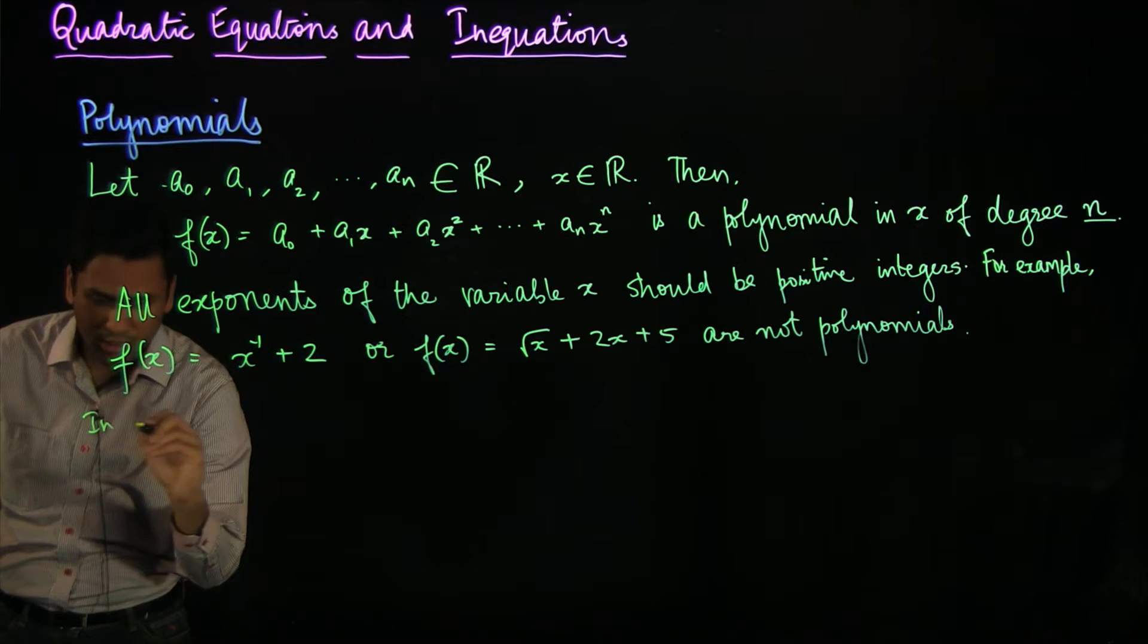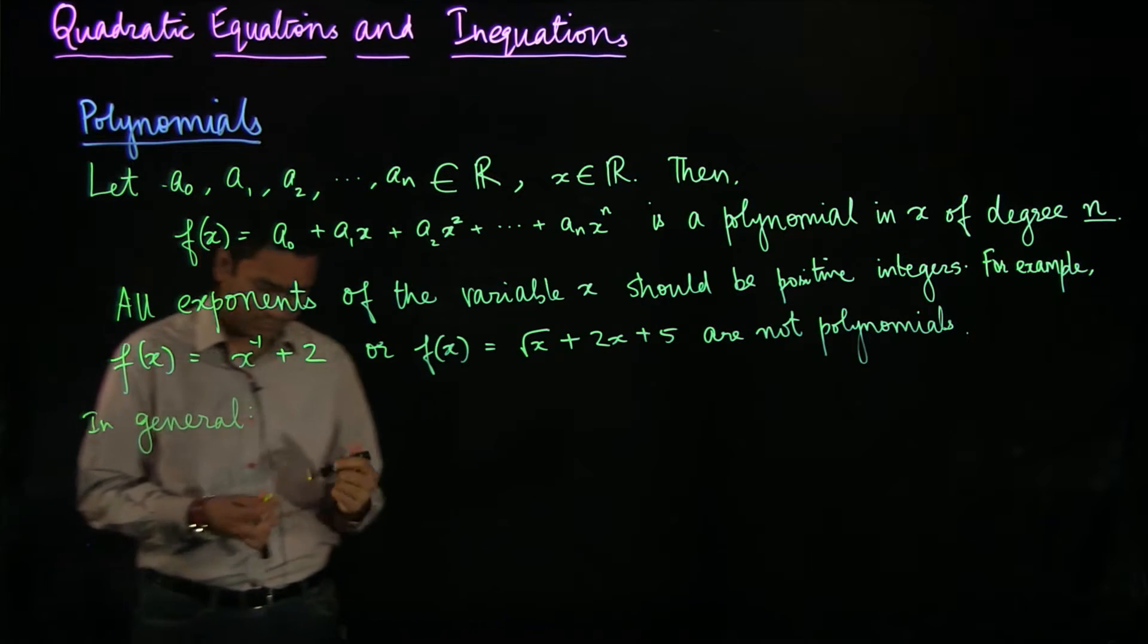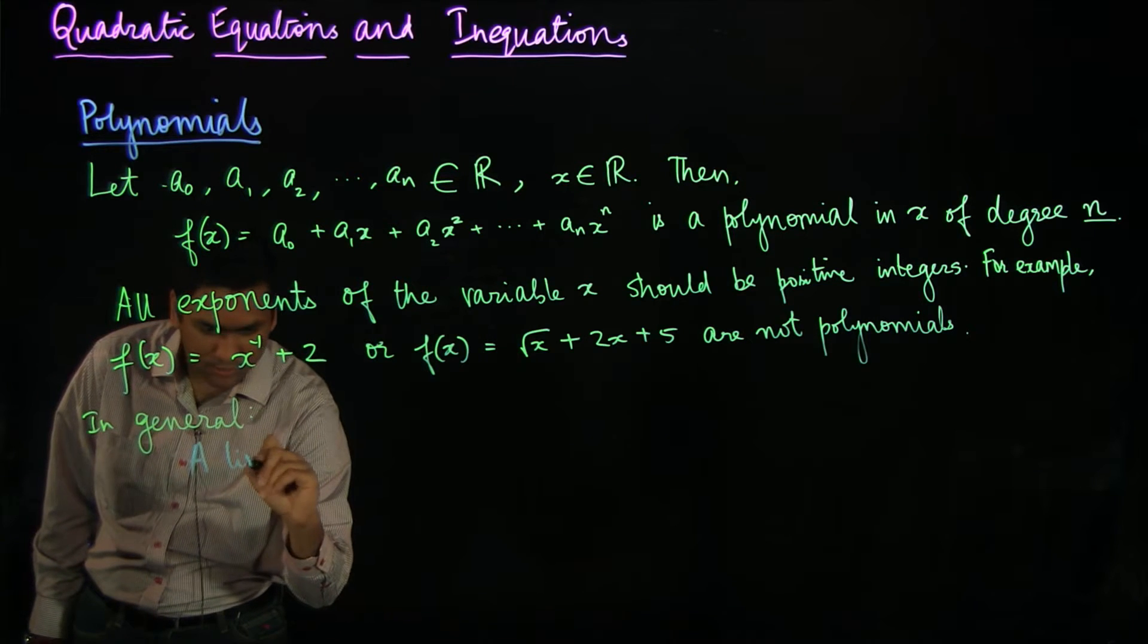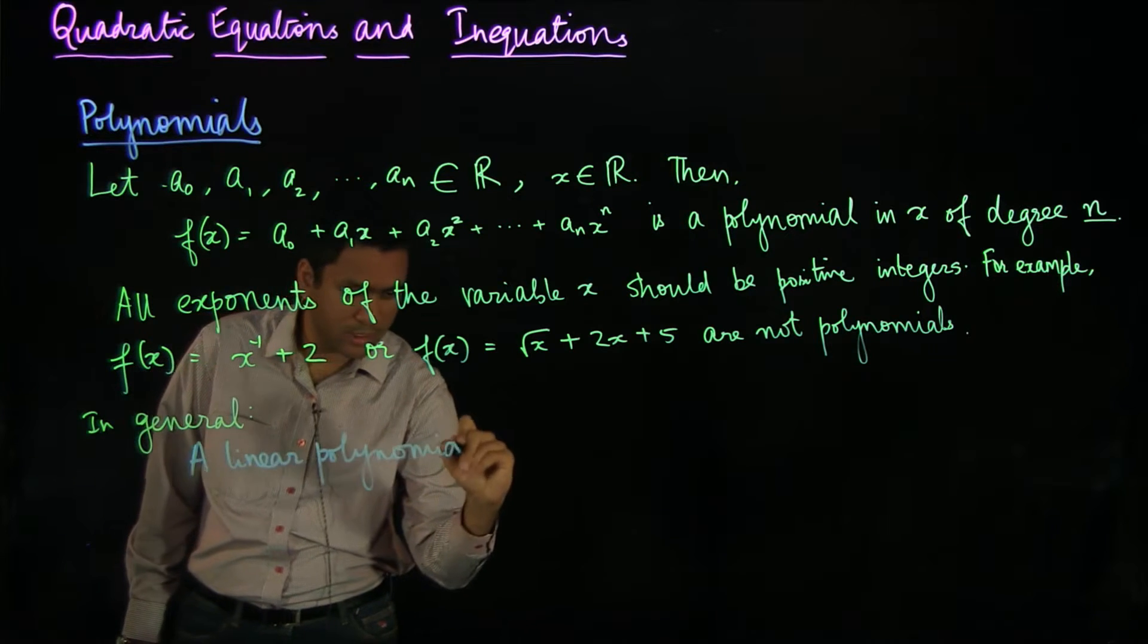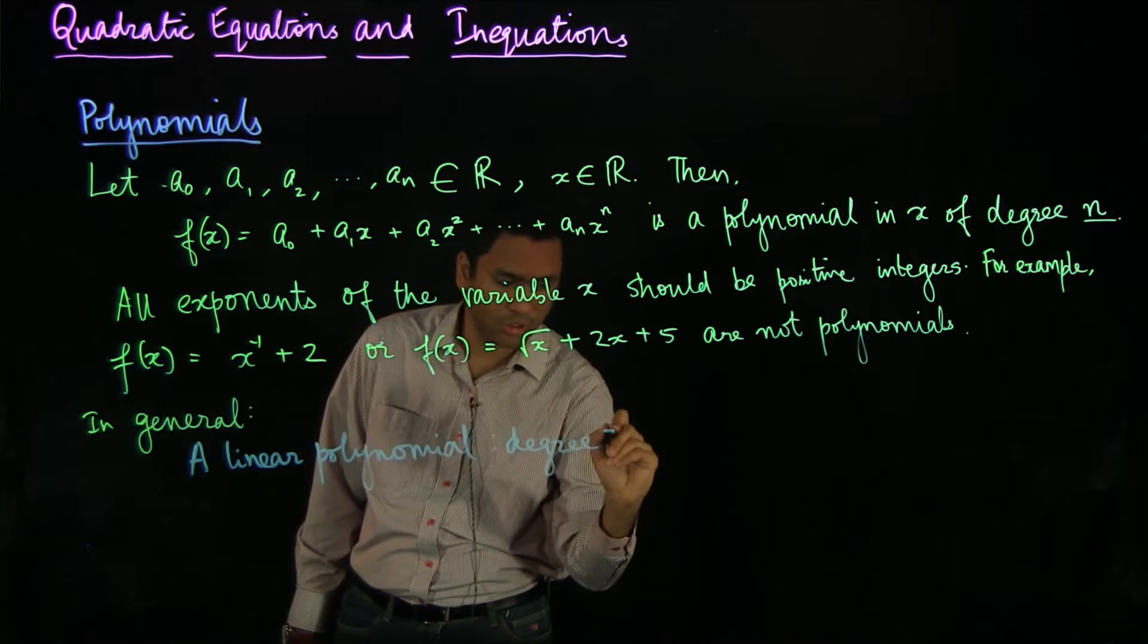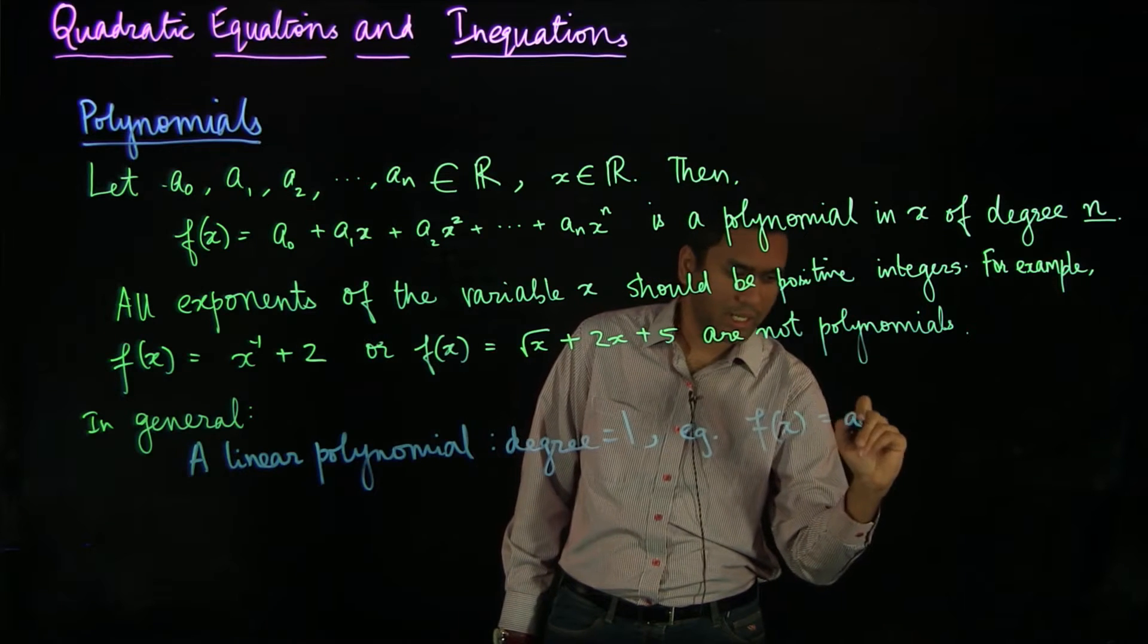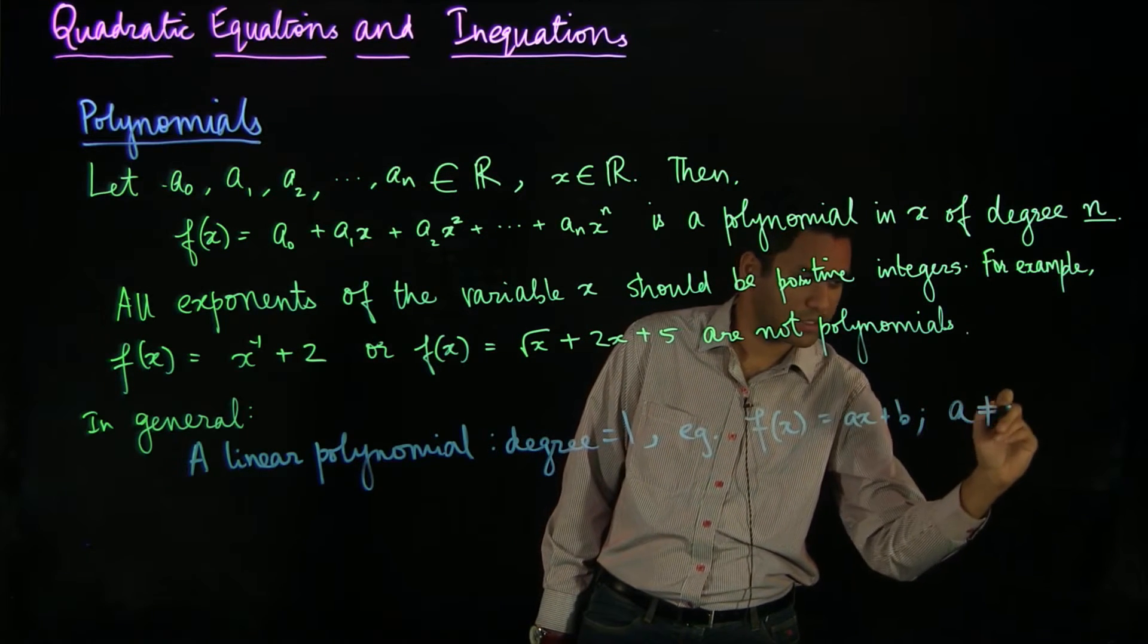In general, we can have a few specific examples of some polynomials. For example, a linear polynomial is one which has degree 1. An example could be f(x) equals ax plus b where a is not equal to 0.